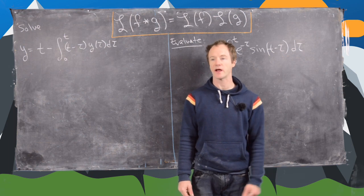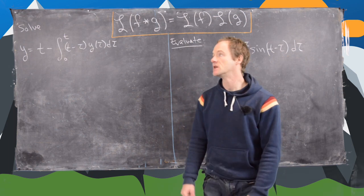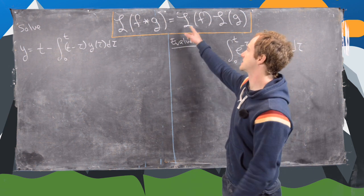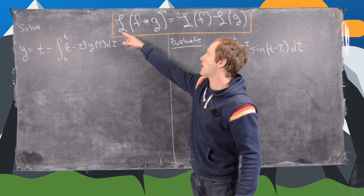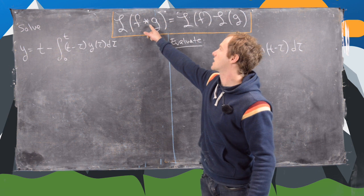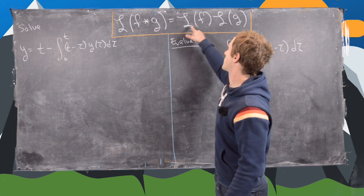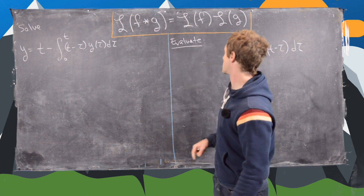Okay, in this video I'm going to look at two quick applications of convolution. Let's recall that convolution has this property: if you take the Laplace transform of f convolved with g, you get the Laplace transform of f times the Laplace transform of g.